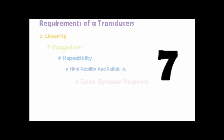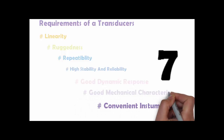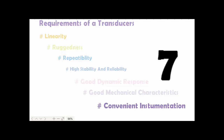Point five is good dynamic response — the transducer should respond to changes in input as quickly as possible. Point six is convenient instrumentation — the transducer should produce a sufficiently high analog output signal with a high signal-to-noise ratio, so the output can be measured directly or after suitable amplification. Point seven is good mechanical characteristics — the transducer should not be affected by external forces or any deformity that affects its performance.